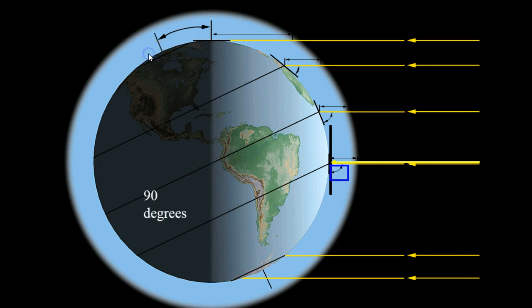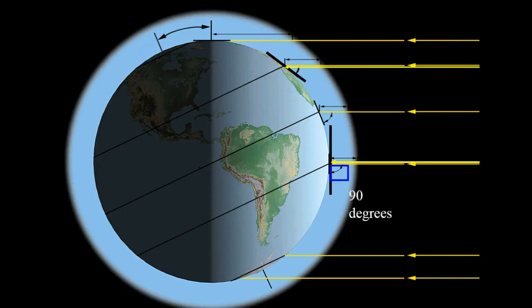That tells us it's winter in this picture. But the bigger picture is really showing us that because of the way we're tilted, different areas on our Earth receive different angles of insolation. In this instance, 23.5 degrees south is receiving a 90-degree angle of insolation — the sunlight is coming in and hitting it directly at 90 degrees on that line of latitude.